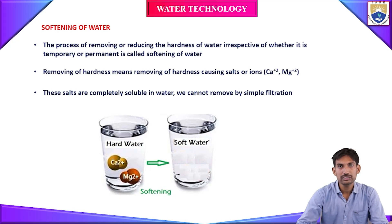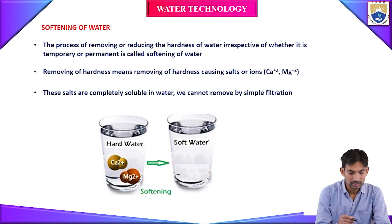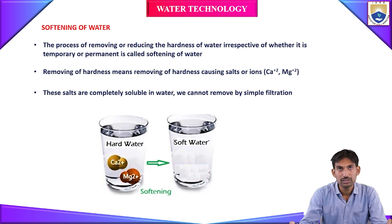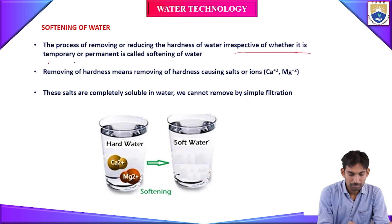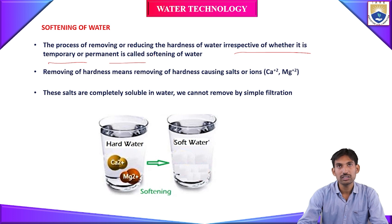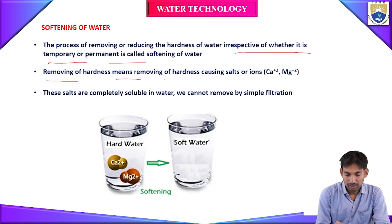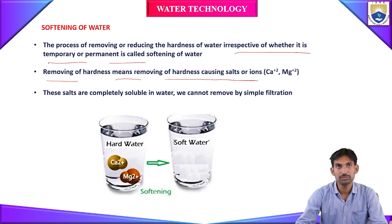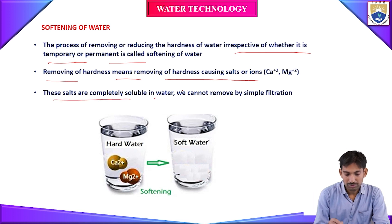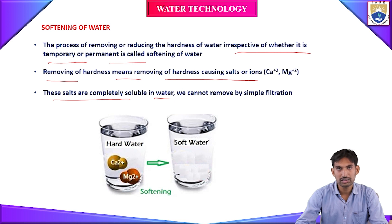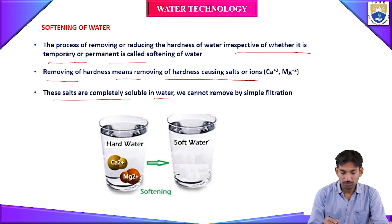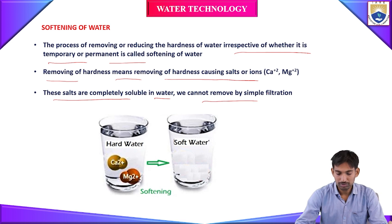Before going to this, we should know about what is softening of water. The process of removing or reducing the hardness of water, irrespective of whether it is temporary or permanent, is called softening of water. This means removing hardness-causing salts like calcium (Ca²⁺) and magnesium (Mg²⁺) from the water. These salts are completely soluble in water, so we cannot remove them by simple filtration.